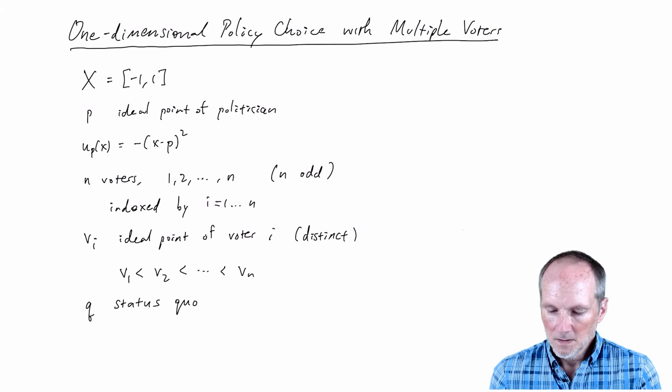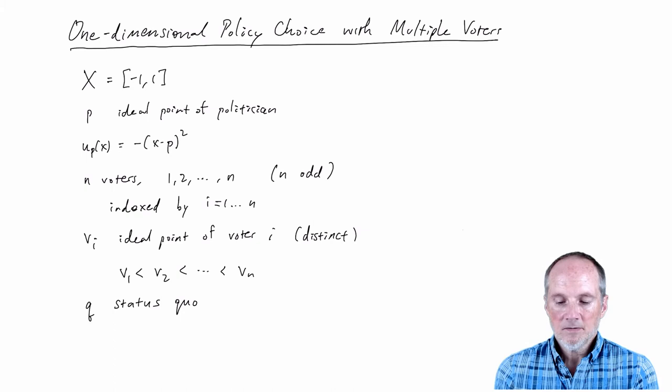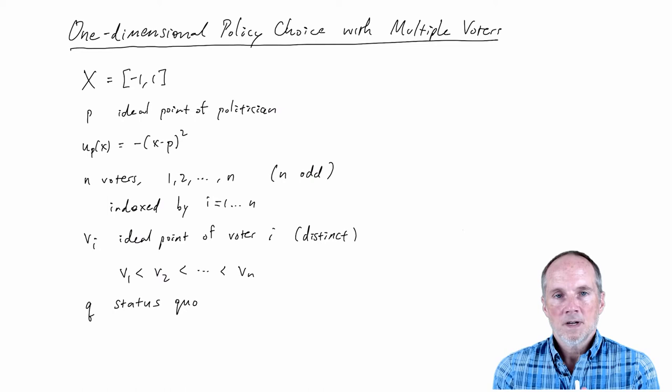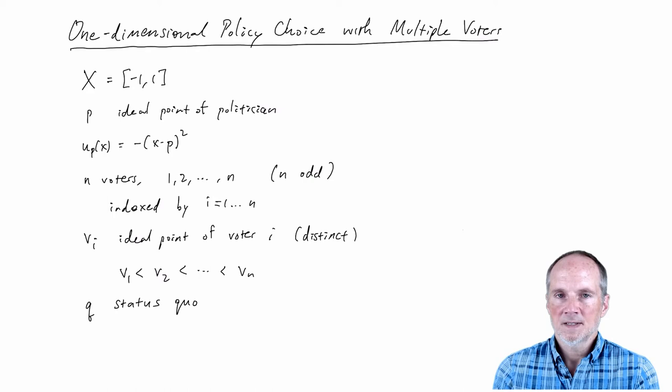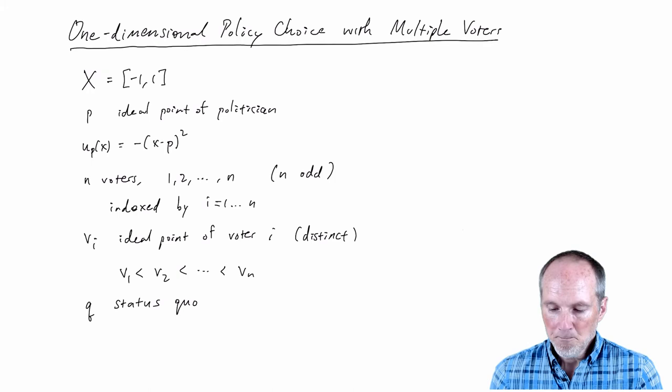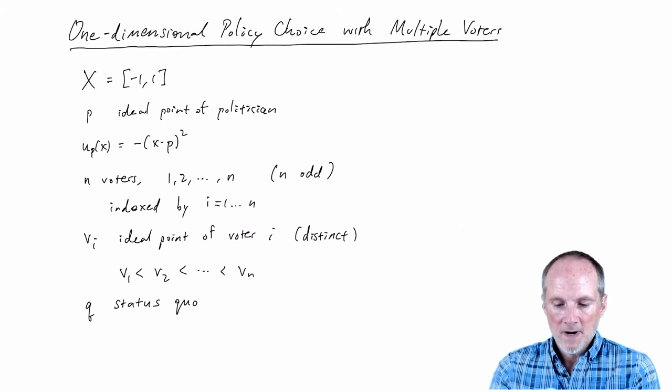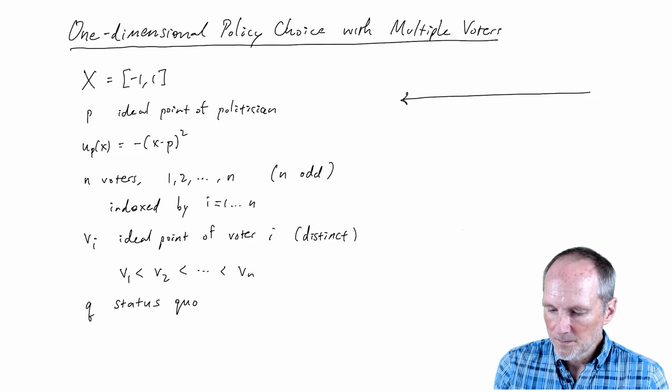We're going to impose the optimality principle here. From the point of view of the politician, when considering different policy proposals, they must anticipate which proposals will be accepted by a majority of the committee and which will be rejected. The politician has to think ahead about what happens as a function of their proposal. Let's draw a picture of this policy space.